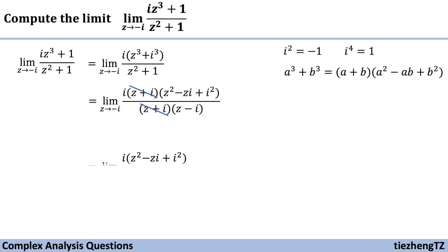so the equation becomes i(z² - z - i) over (z - i). So now when we are here we can just substitute.